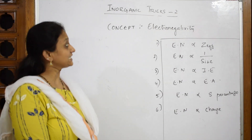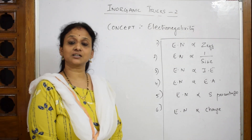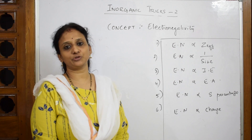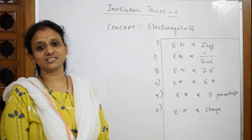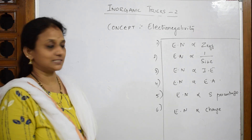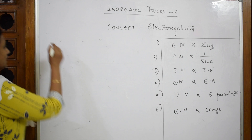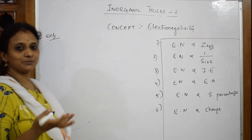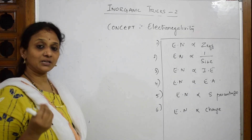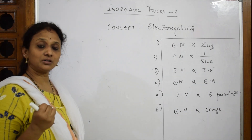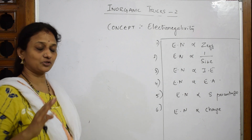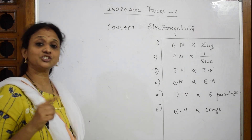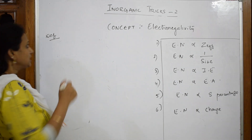Now let us come back and see the next trend that is electronegativity in the periodic table. What actually is electronegativity? If I have to define electronegativity, it is the ability — not the amount — it is the ability to attract the shared pair of electrons.